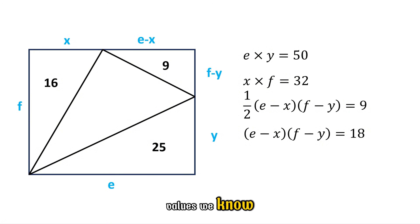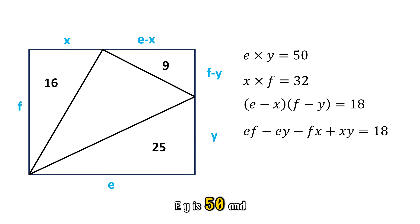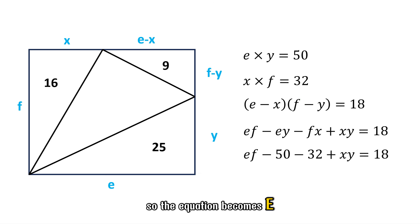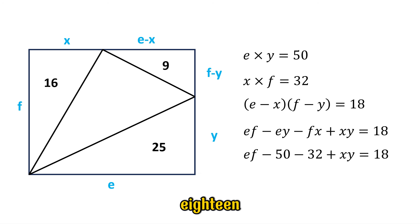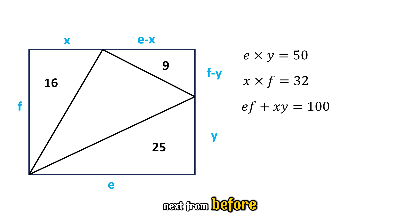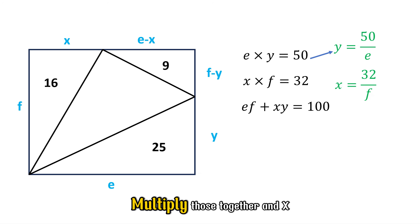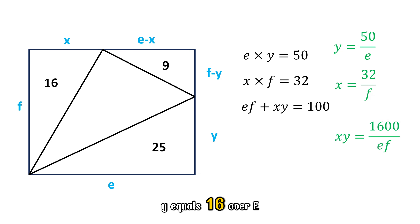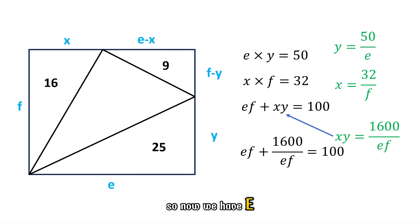Now let's plug in the values we know. EY is 50 and FX is 32. So the equation becomes EF minus 50 minus 32 plus XY equals 18. Cleaning that up, we get EF plus XY equals 100. From before, X equals 32 over F and Y equals 50 over E. Multiply those together and XY equals 1600 over EF. So now we have EF plus 1600 over EF equals 100.